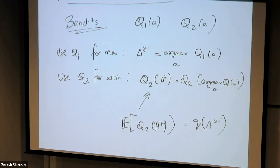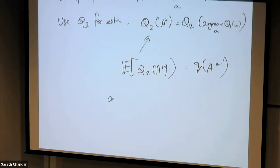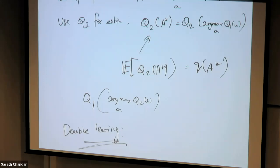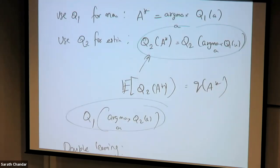There's no reason why it has to be Q1 for max and Q2 for value — it could be the opposite as well. You could have argmax from Q2 and then use Q1 for the value estimate. You can do both together. That is the idea behind double learning. In double learning, you have two different estimates, and in every episode you randomly assign one to be used for the max and the other for the value. You can switch this every episode. This will double the memory requirements because you keep two Q values; however, the computation is exactly the same.